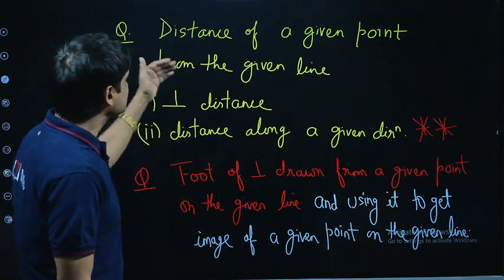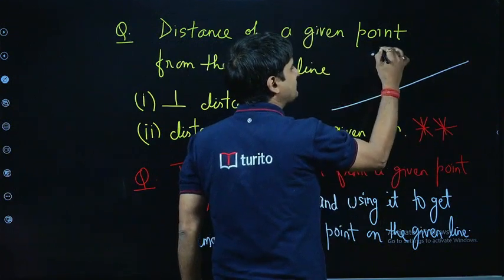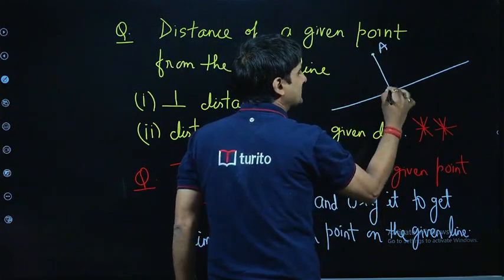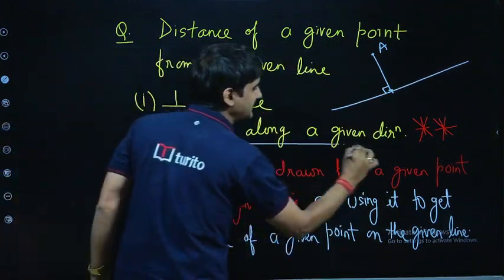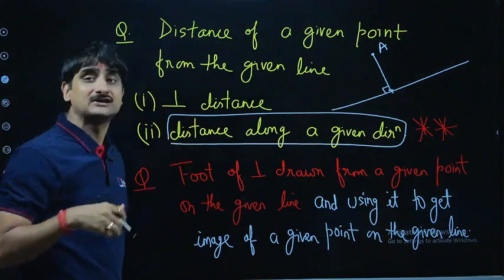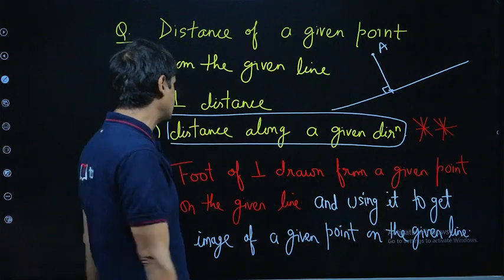This type of question: distance of a given point from the line. If that's the line and that's point A, so that's the perpendicular distance. But what I expect is important - distance along a given direction. That means not a perpendicular distance but any other given direction.